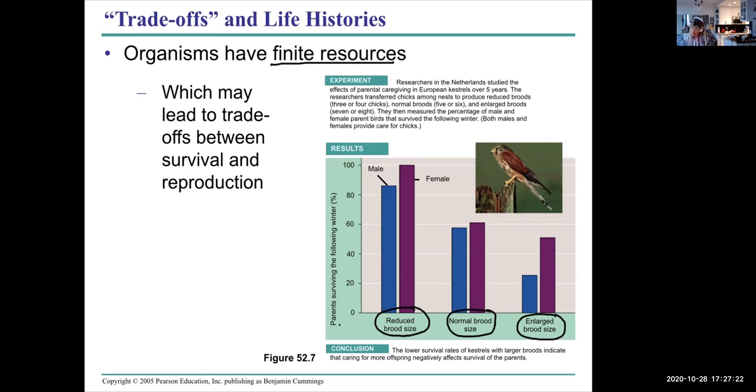This is the parent surviving the following winter. You can see that in the reduced brood size, survivorship is much higher for both. With a normal brood size, it's about 60%. With a very large brood size, however, it looks like there is lower survivorship because a lot of the resources and energy is expended on the offspring and not on the individual.